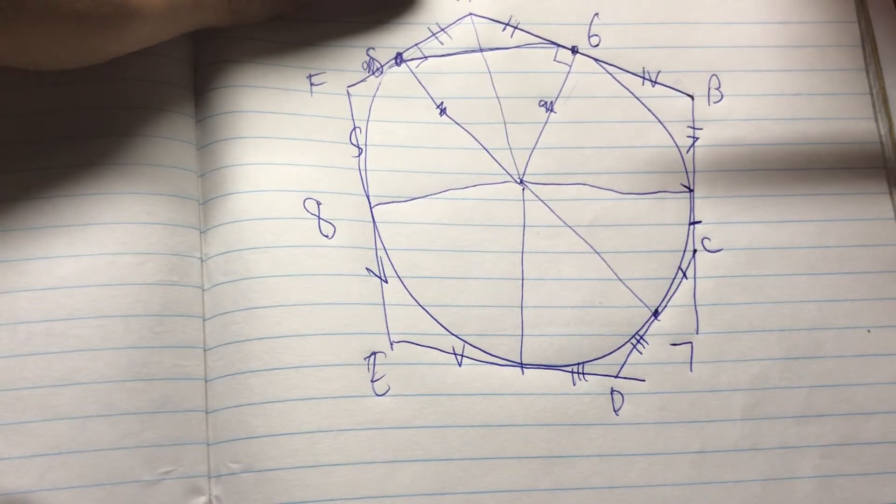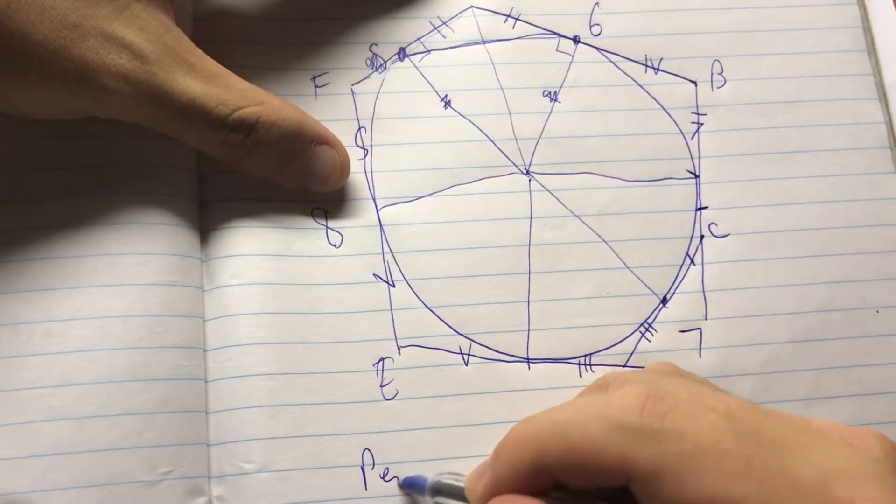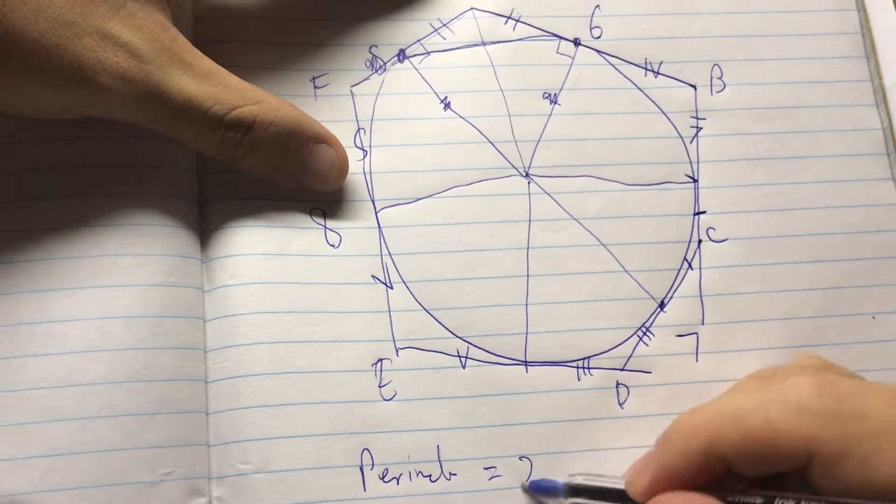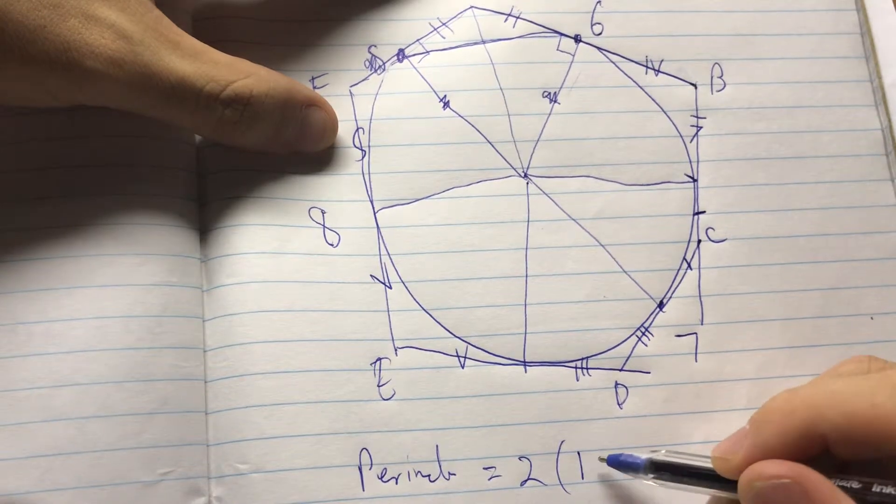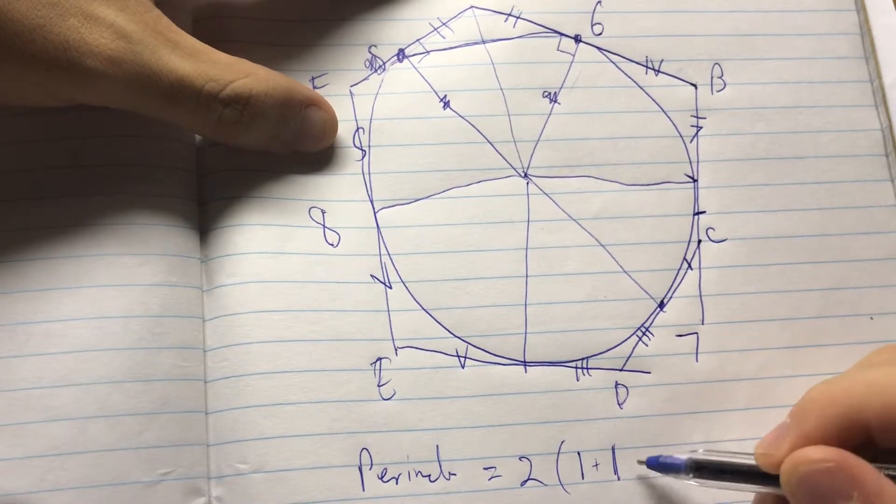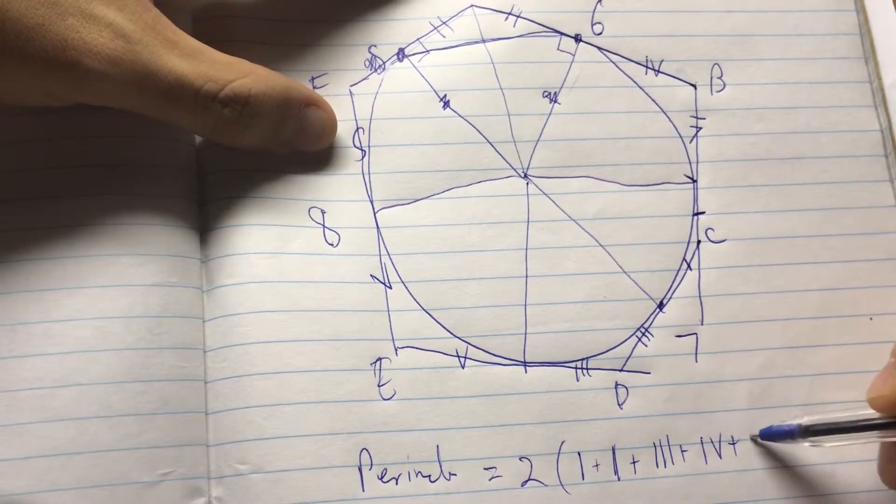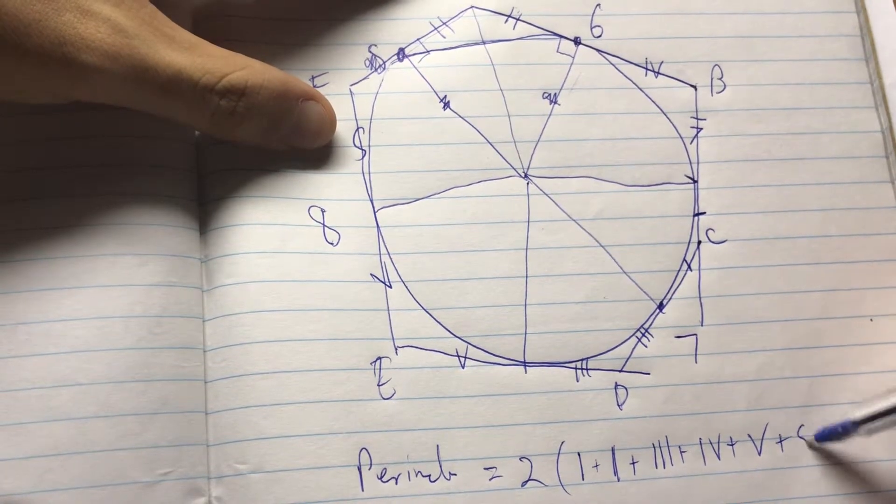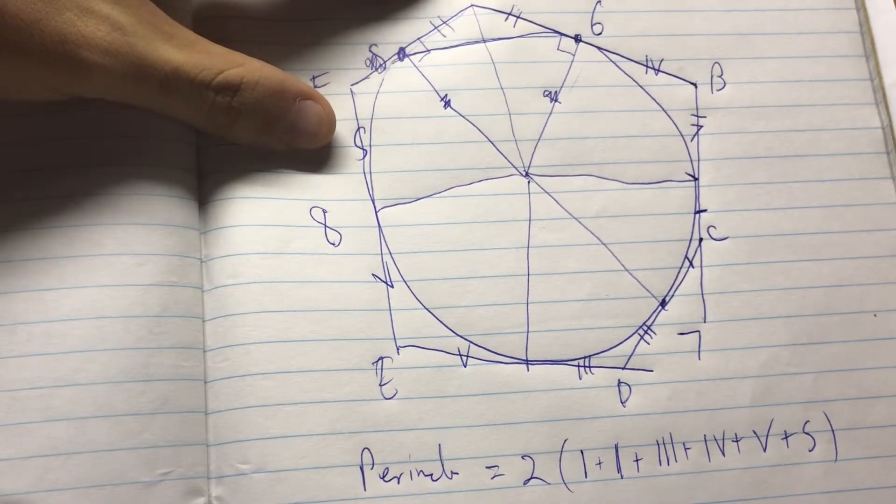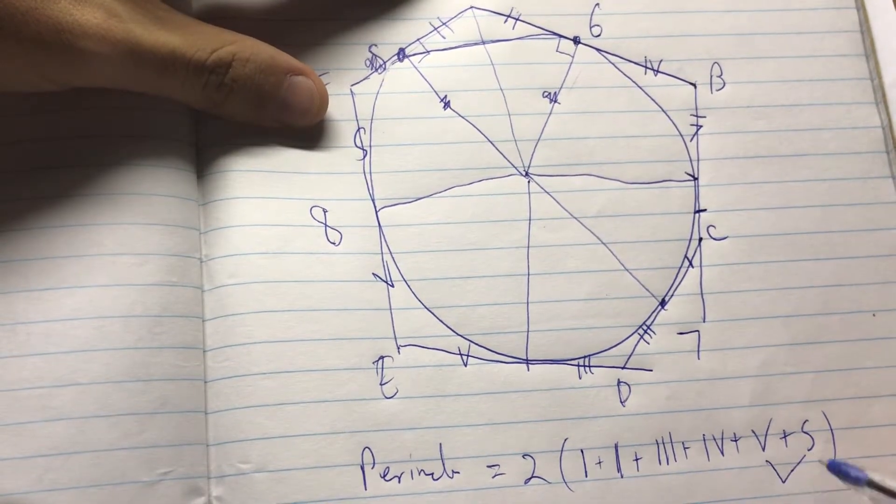So, basically the perimeter is just... So, the perimeter equals twice the sum of this one plus two plus three plus four plus five plus s. Okay?